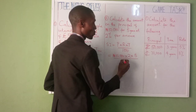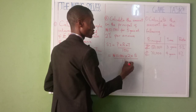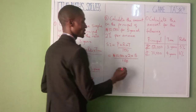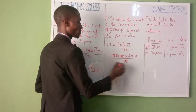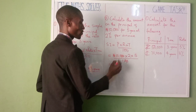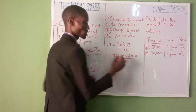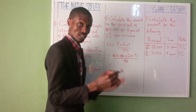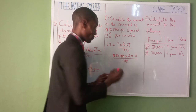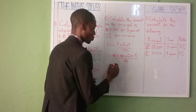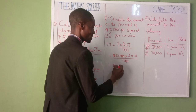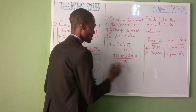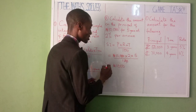Divided by 100. Let's cancel: 0 cancels 0, 0 cancels 0. Here we have 100. 100 times 2 is 200. 200 times 5 is 1,000. So the simple interest is one thousand.